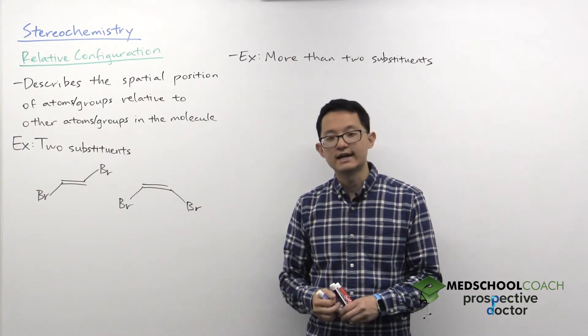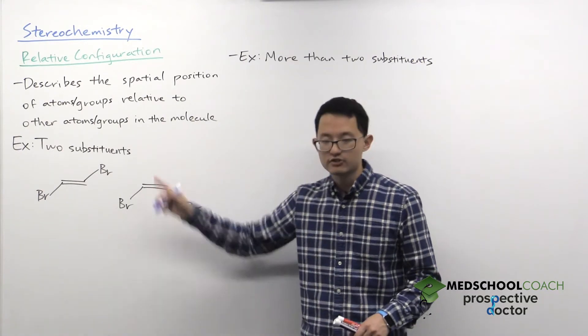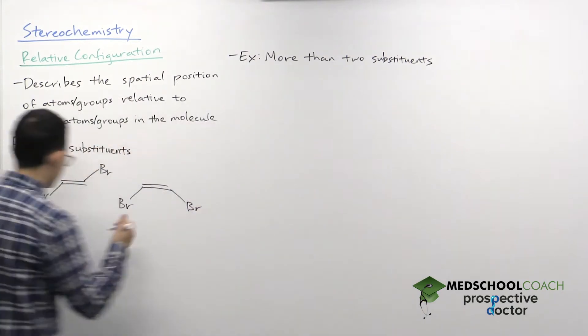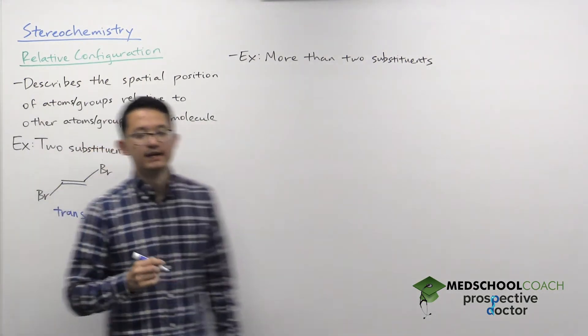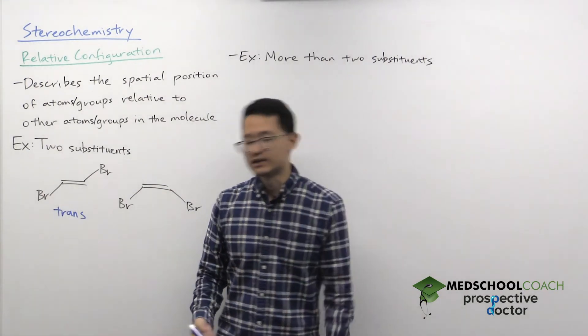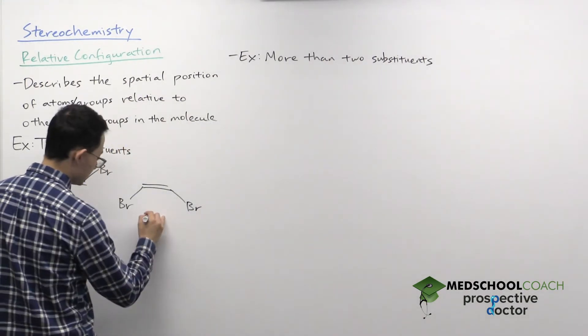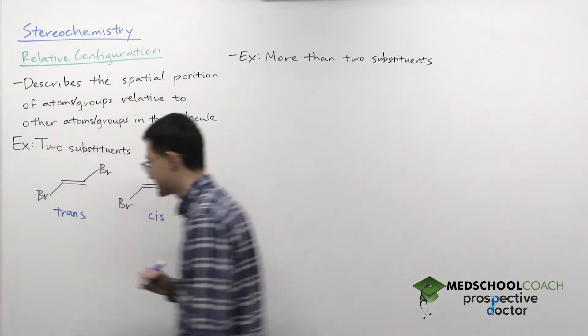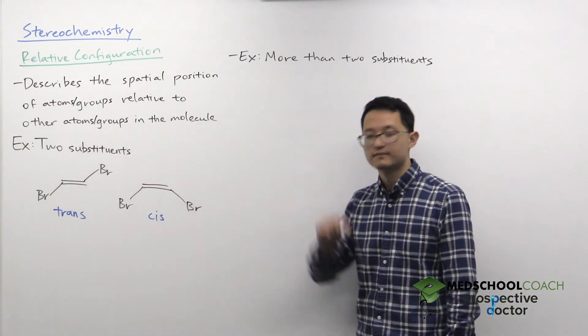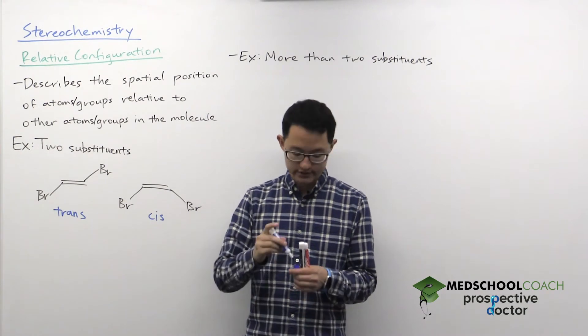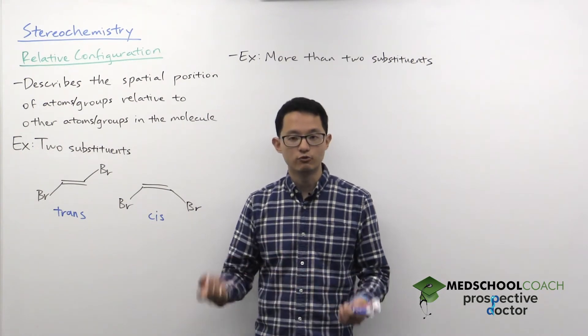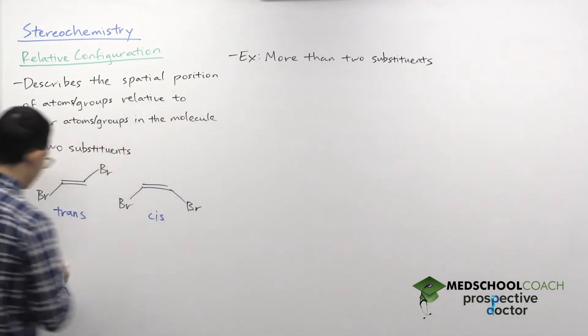And the way it's assigned is if your substituents are facing the opposite side, then we see that you have the trans configuration. Whereas if your two groups are facing the same side, then you have the cis configuration. And this applies not only to double bonds, but it can apply also to rings. So let's take a look at a couple examples.